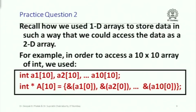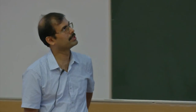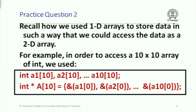The second practice question builds on what was seen in the last class. We used one-dimensional arrays to store data accessible as a two-dimensional array. For a 10 by 10 array of int, we used 10 one-dimensional integer arrays and one one-dimensional integer pointer array, initializing each pointer element with the address of the first element of the corresponding row array — equivalent to writing ampersand a1[0] or just a1.